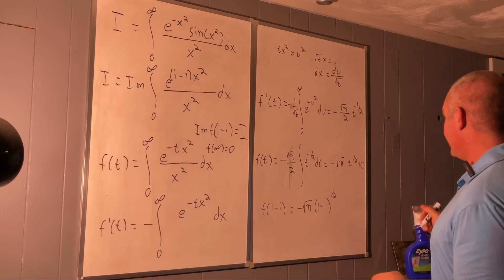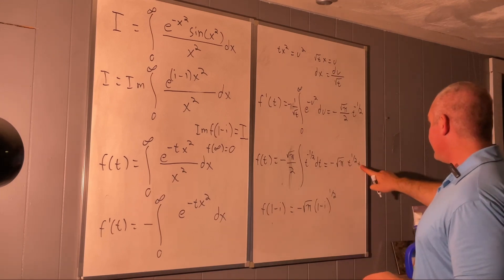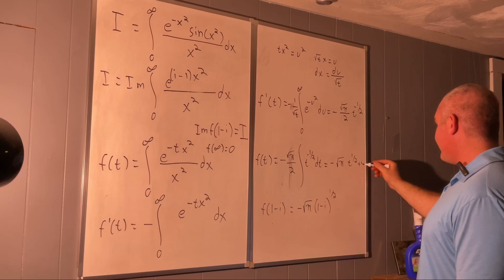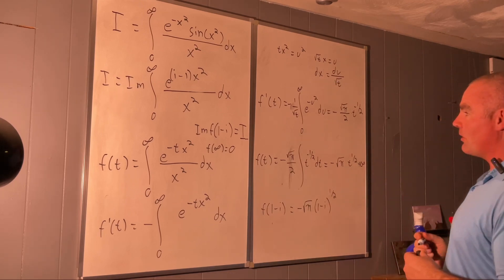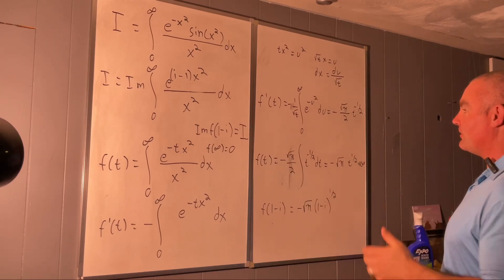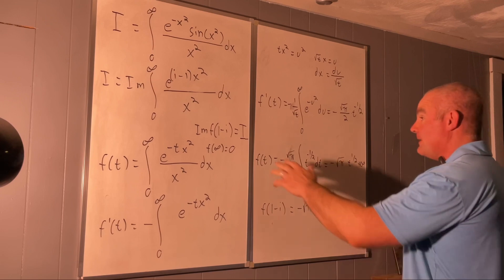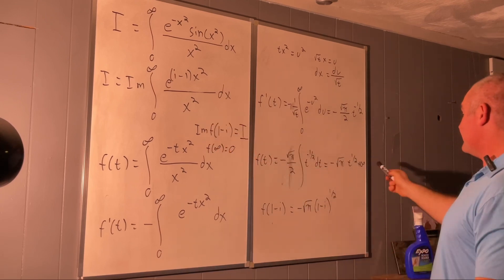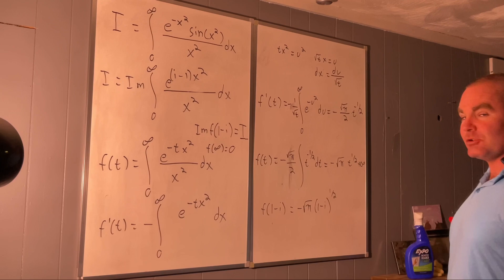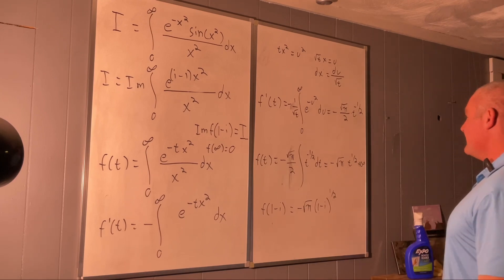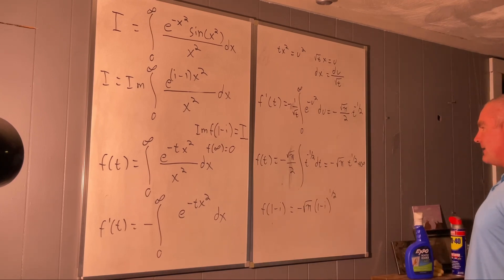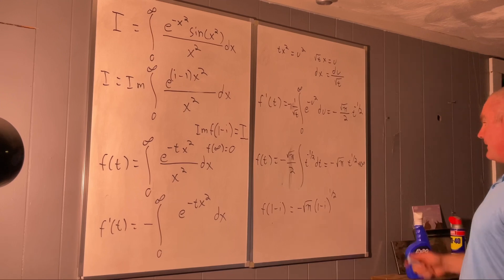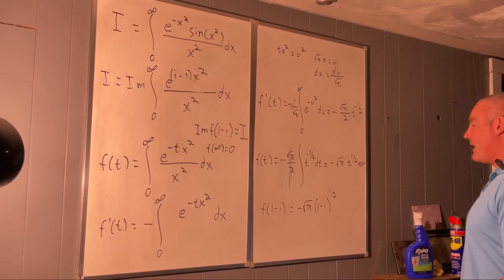We don't usually like to have that, but since we're working in the complex world and will end up taking the imaginary part — this infinity is a purely real infinity — taking the imaginary part at the end, that positive infinity will simply drop out.